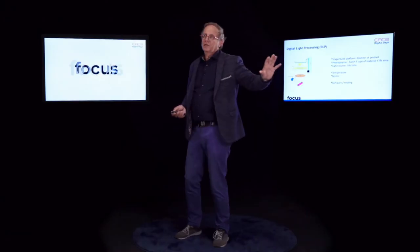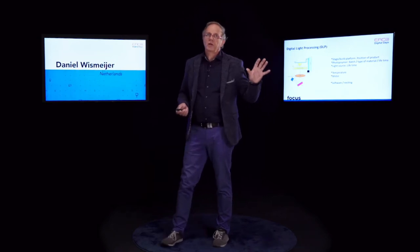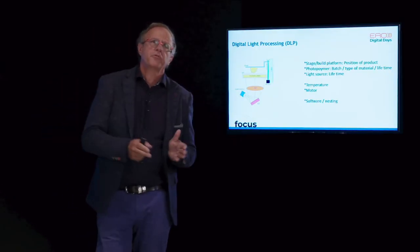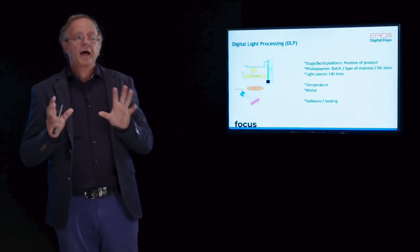When looking at resin-based materials in dentistry, you'd think about digital light processing. What influences precision is where you place your object on the stage. If it's in the middle, the light through the lens hits the build platform centrally, but light going through the sides of the lens could have a slightly different frequency than light through the centre, and this affects the precision of what you're making.